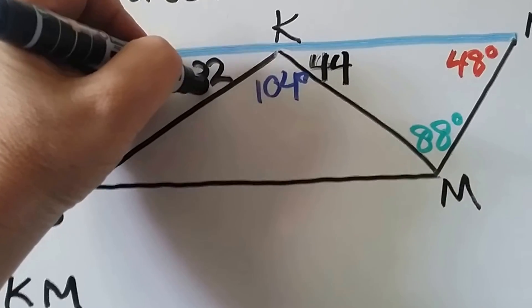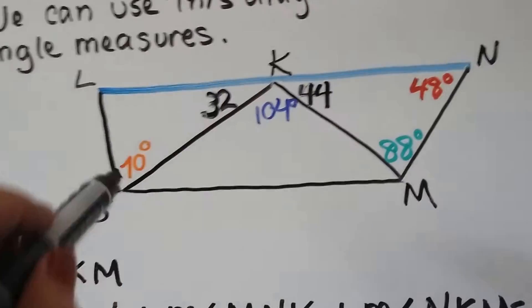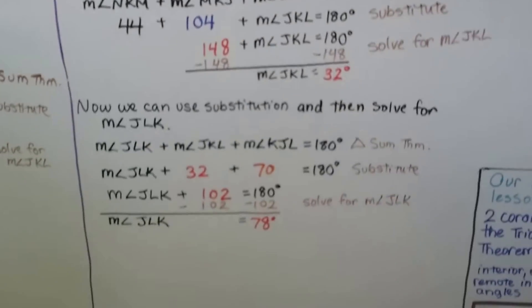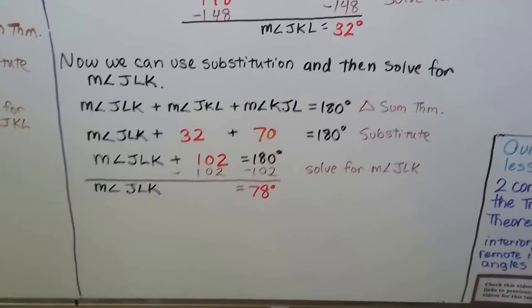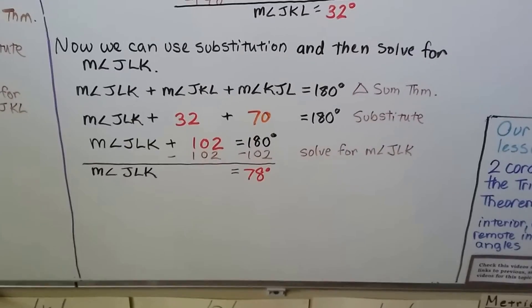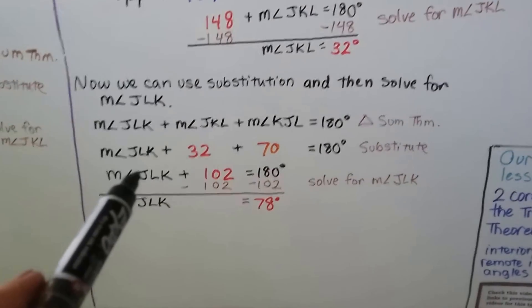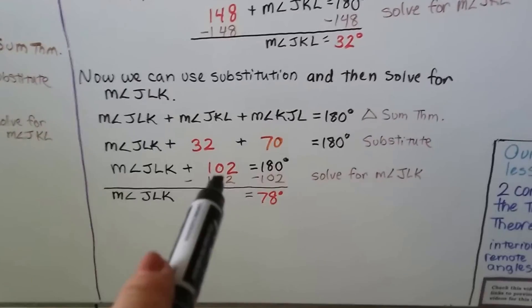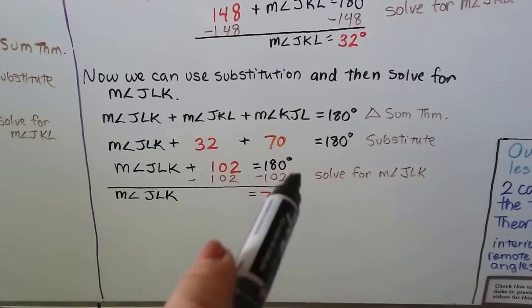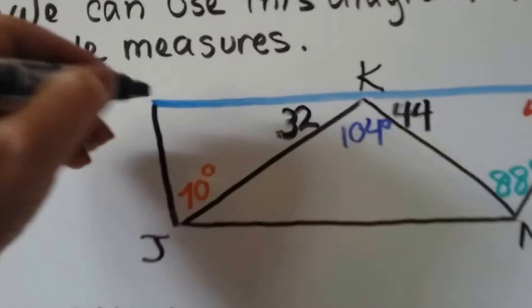By finding angle JKL, it helps us find angle JLK. Now we use the Triangle Sum Theorem: the measure of angle JLK plus angle JKL plus angle KJL equals 180 degrees. We add the 32 we just found and the given 70, getting 102. Subtracting 102 from 180, the measure of angle JLK equals 78 degrees.